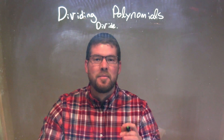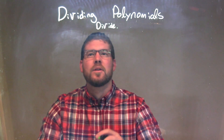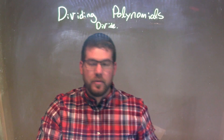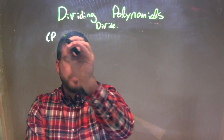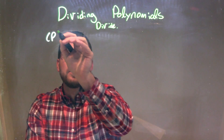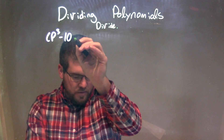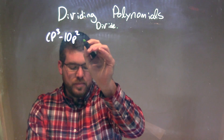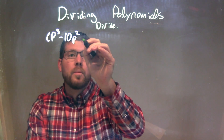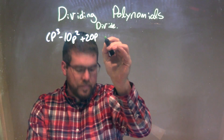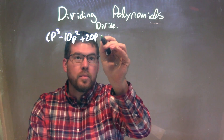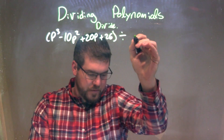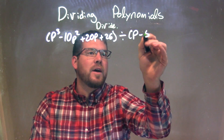Hi, I'm Sean Gannett and this is MinuteMath, and today we're going to learn about dividing polynomials. So if I was given this problem: p to the third minus 10p squared plus 20p plus 26 divided by p minus 5.